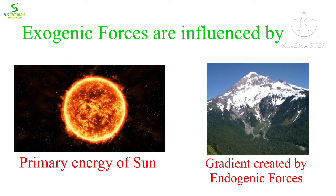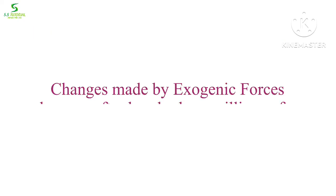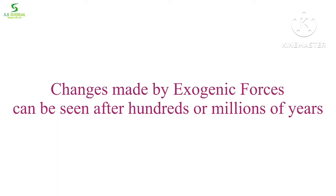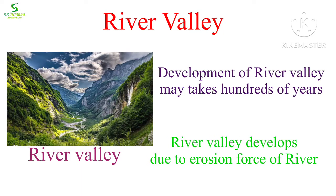Exogenic forces are mostly influenced by the primary energy of the sun and also by the gradient created by the endogenic forces of the earth. It may take over 100 or millions of years to see the changes in the earth's surface produced by exogenic forces. For example, a river valley takes hundreds of years for its development, formed by the erosional force of a river.